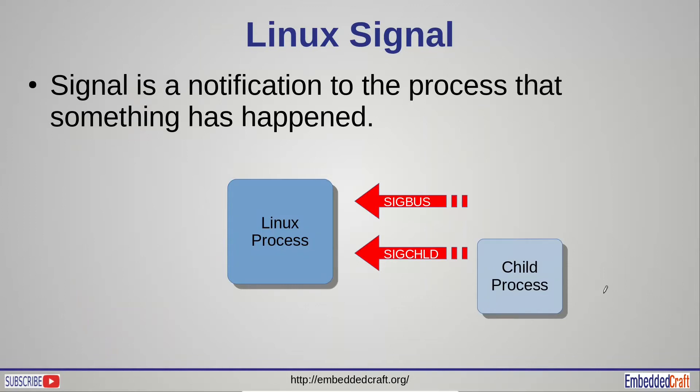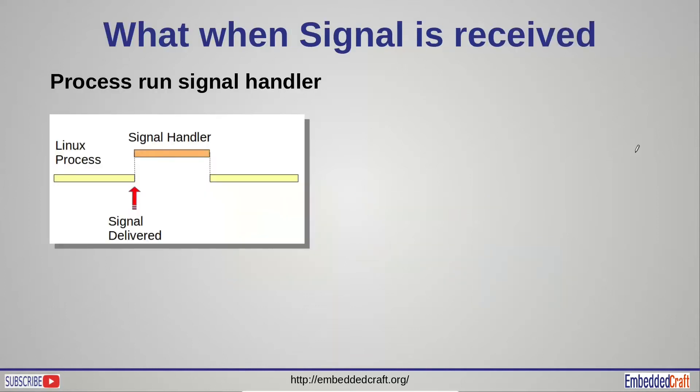Signal is very similar to interrupt. It is a method of sending notification to a process. Linux processes can receive signals from multiple sources. For example, SIG bus signal. Child process can also send SIG CHLD signal to parent process.